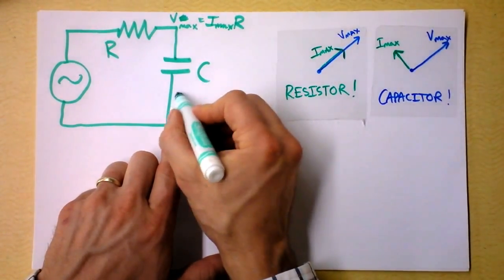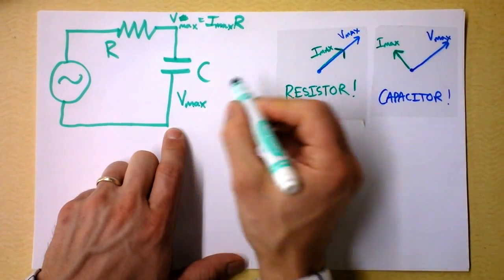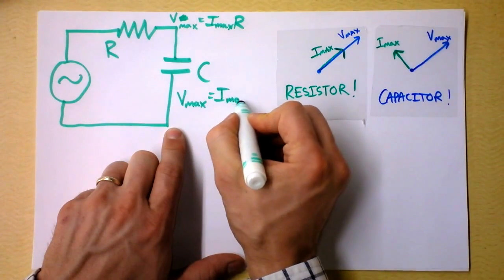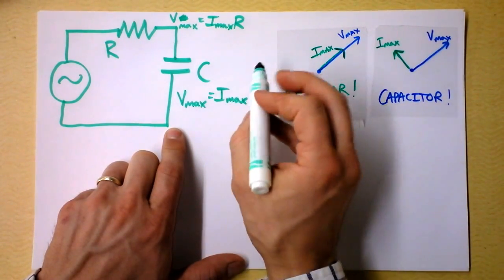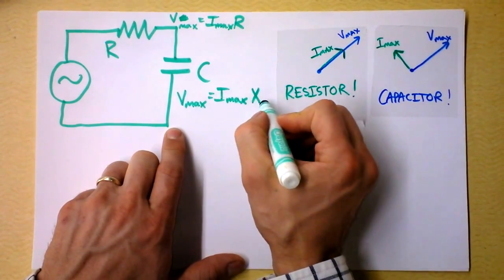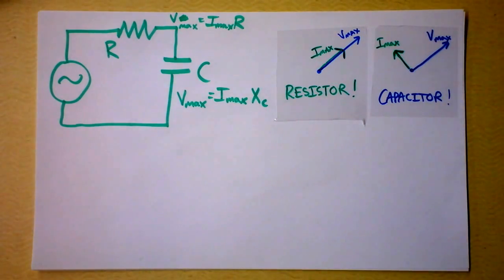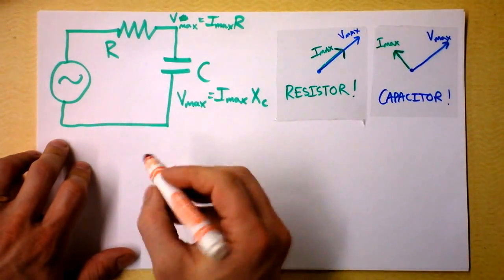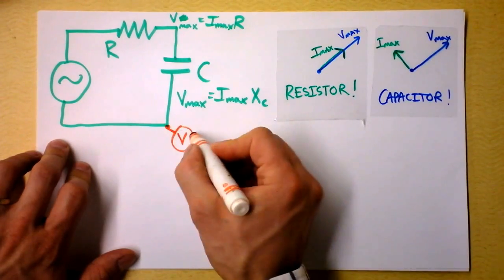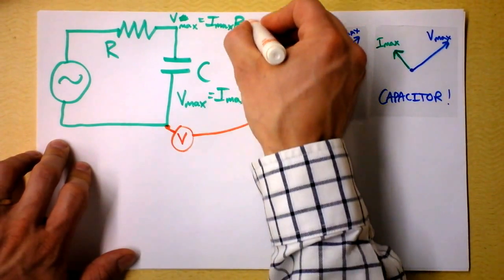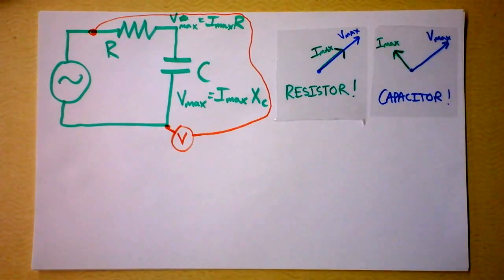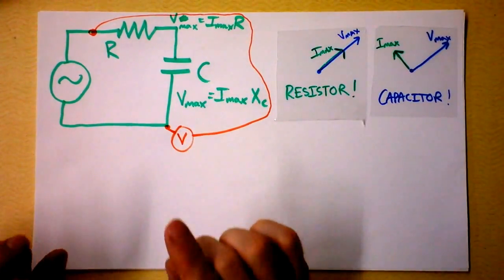And the voltage maximum across the capacitor, well, that voltage maximum is going to be the maximum current, again, times the capacitive reactance, which we wrote as X sub C. So you would think then that if somebody came up to you and said, I want to know the voltage not between here and here and not between there and there, but I want to know the voltage between here and here, that you could add them up. But that's not the case because they don't reach their peaks at the same time.